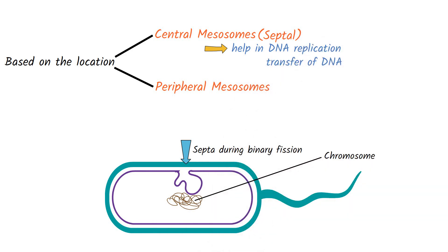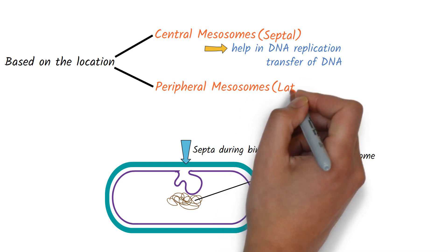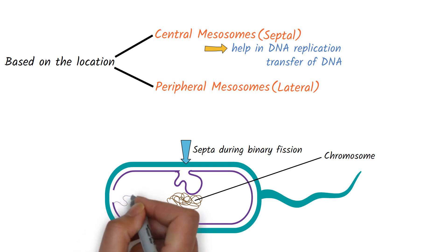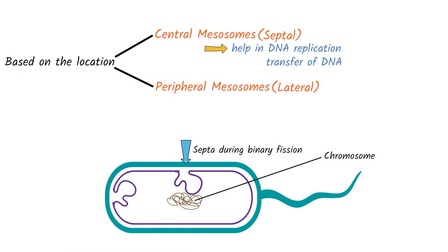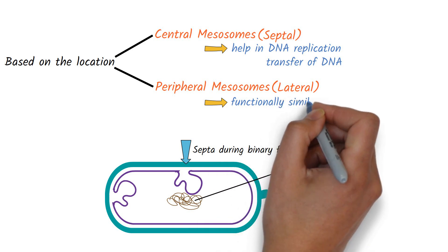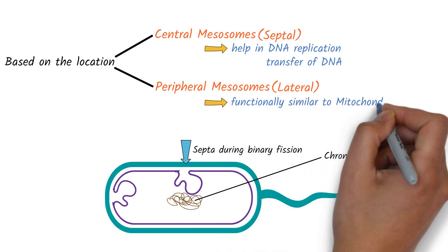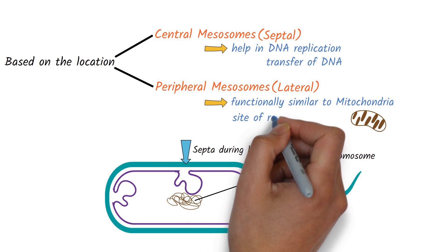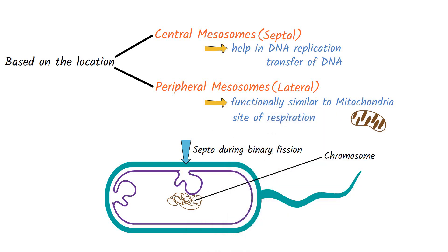The perifural mesosomes are also called lateral mesosomes, and are formed at the edge of the cell. It is believed that perifural mesosomes are functionally similar to the mitochondria of eukaryotic cells, which means they act as the site of respiration in prokaryotic cells.